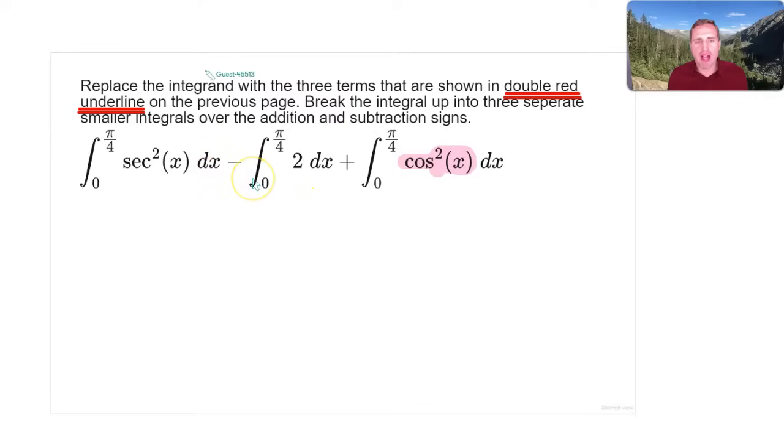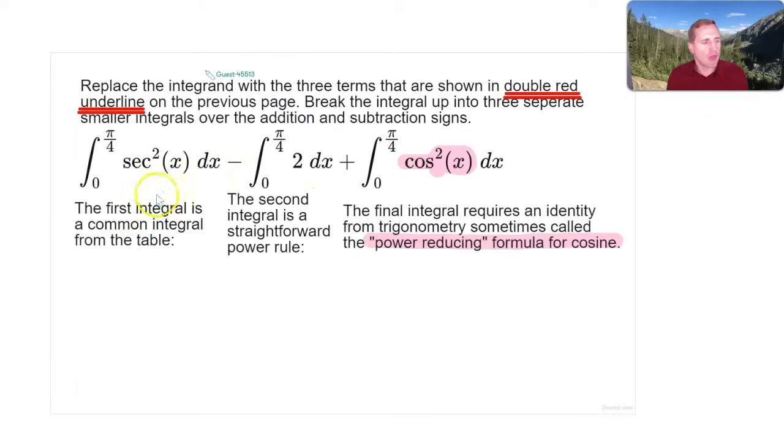We get the integral from 0 to π/4 of sec²(x) dx, minus the integral from 0 to π/4 of 2 dx, plus the integral from 0 to π/4 of cos²(x) dx. Now these first two integrals are actually relatively straightforward. The first integral is a common integral from the integration tables.